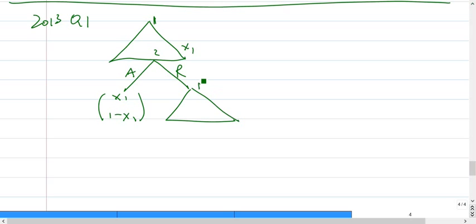If it's rejected, then player 1 is offering again, so this is the main difference. Suppose the offer is x2, then I can accept or reject. So say x2, 1 minus x2, no that's not right, we have a discount factor. So delta times x2 and delta times 1 minus x2.